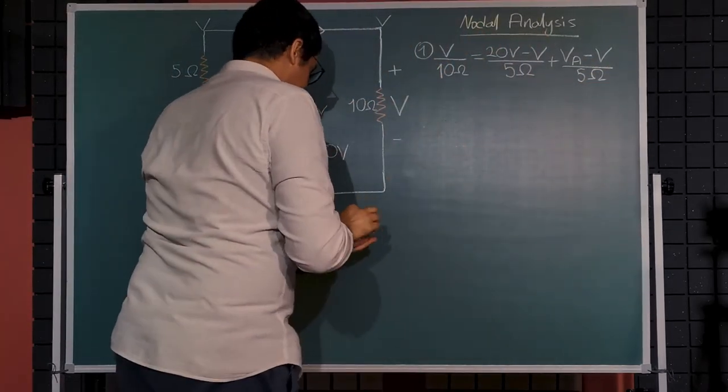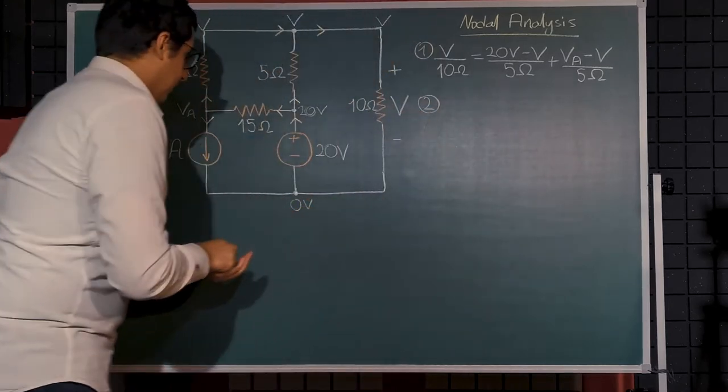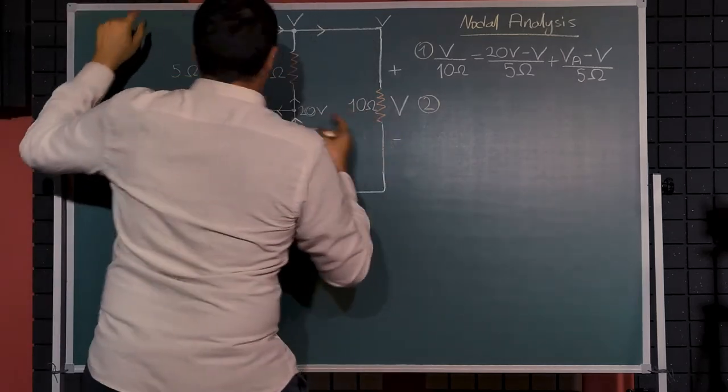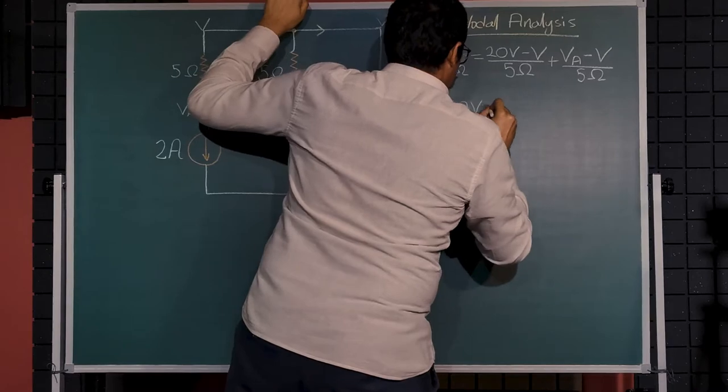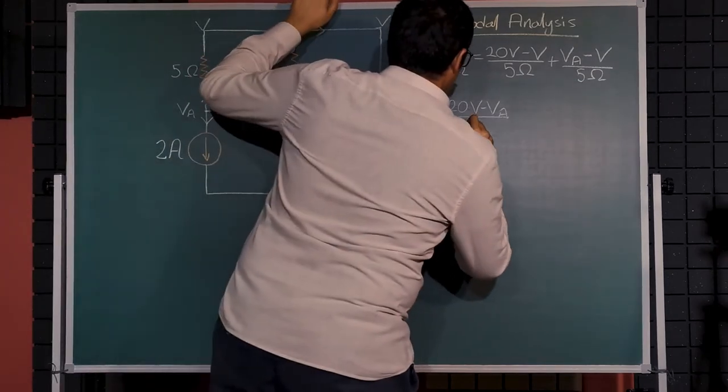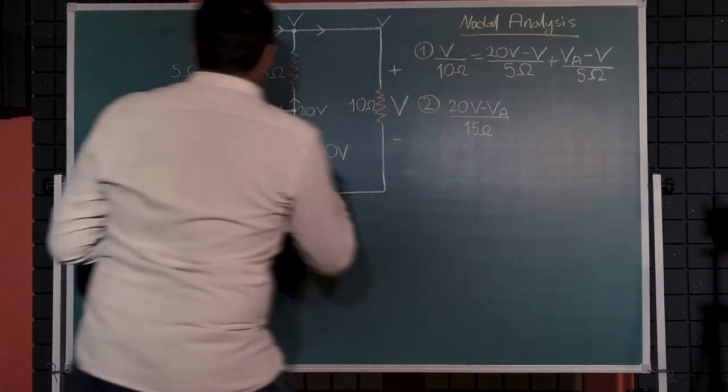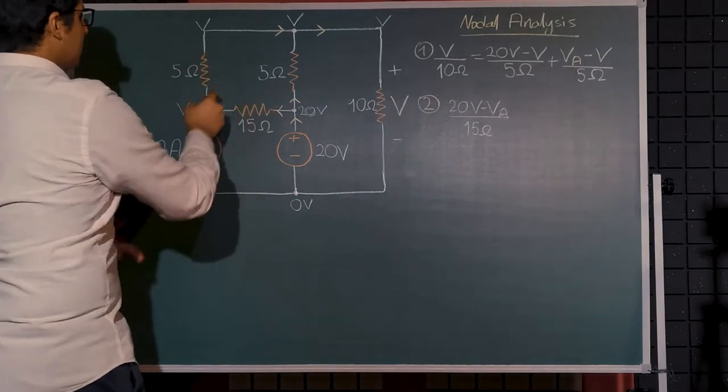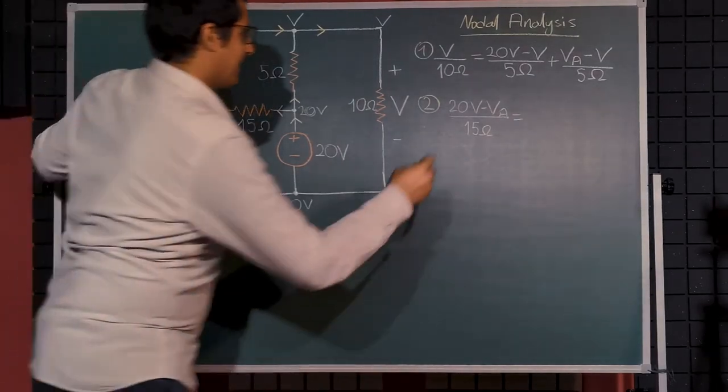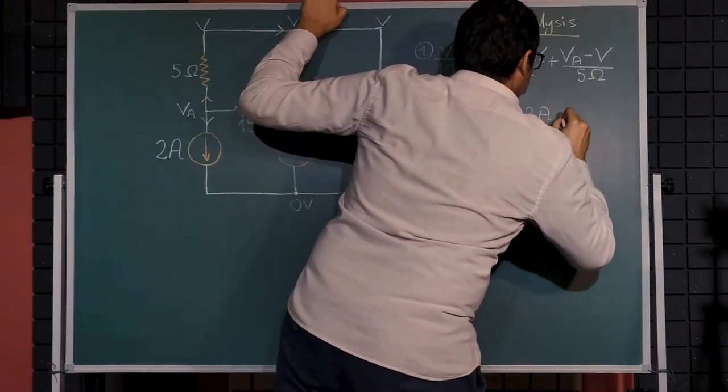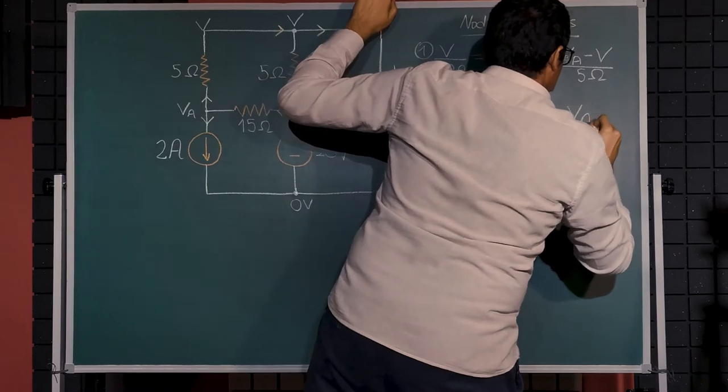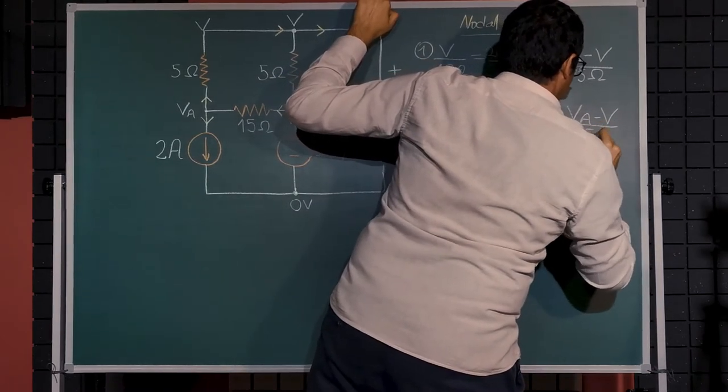This is my first equation. And here is my second equation, I will use this node. I know the current towards va must be 20 volts minus va divided by the resistance between them, which is 15 ohms. And that must be equal to the sum of these two currents, one of which we know as two amperes, so we can write it directly: two amperes plus va minus v divided by 5 ohms.